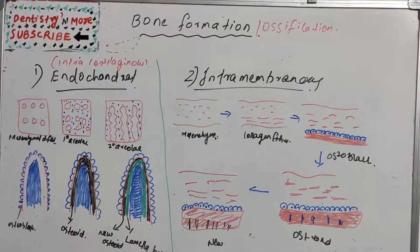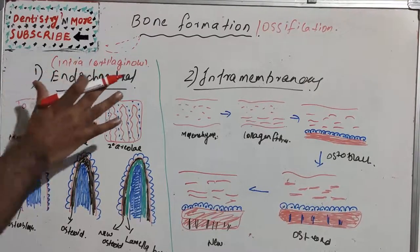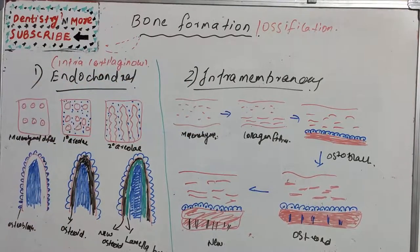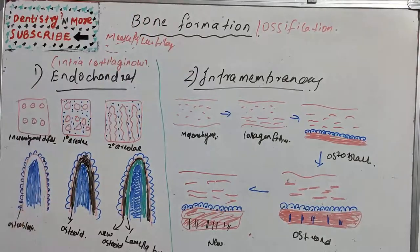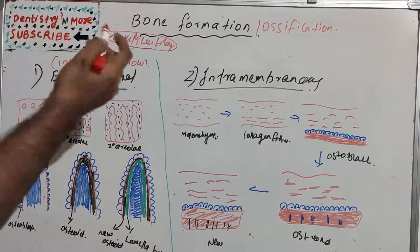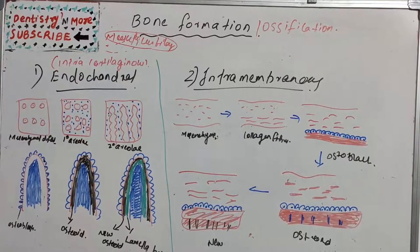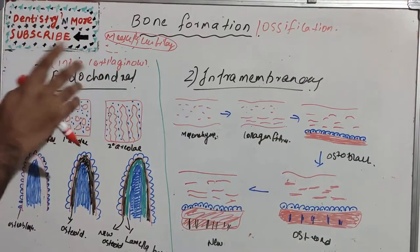We'll start with endochondral bone formation, also known as intracartilaginous. The basic difference is that in intracartilaginous formation, there will be a cartilage template or cartilaginous model which serves as a foundation for the future bones. For example, Meckel's cartilage — which we've learned in embryology under pharyngeal arches — acts as a template for bones such as the malleus and incus. This is endochondral bone formation.